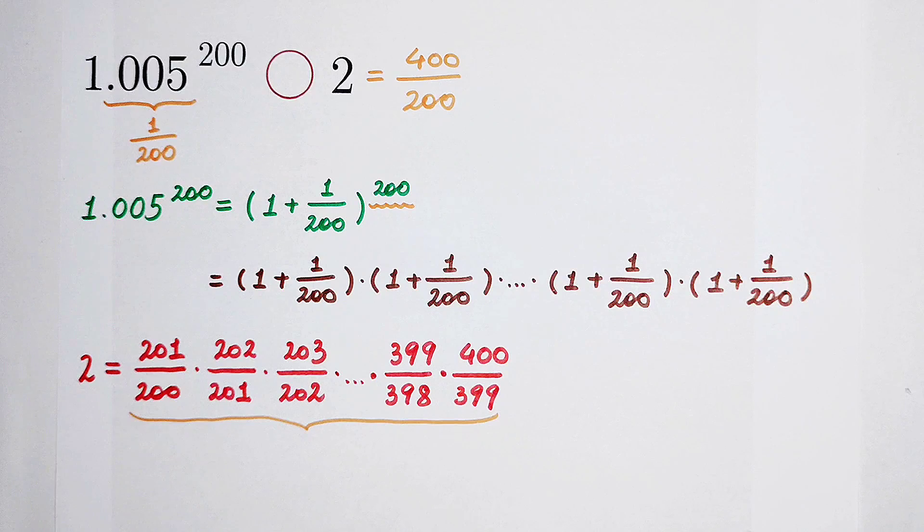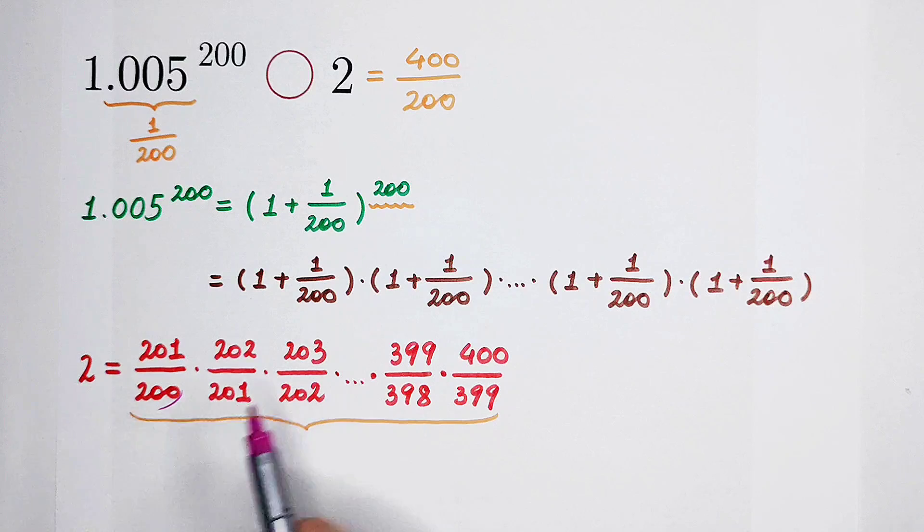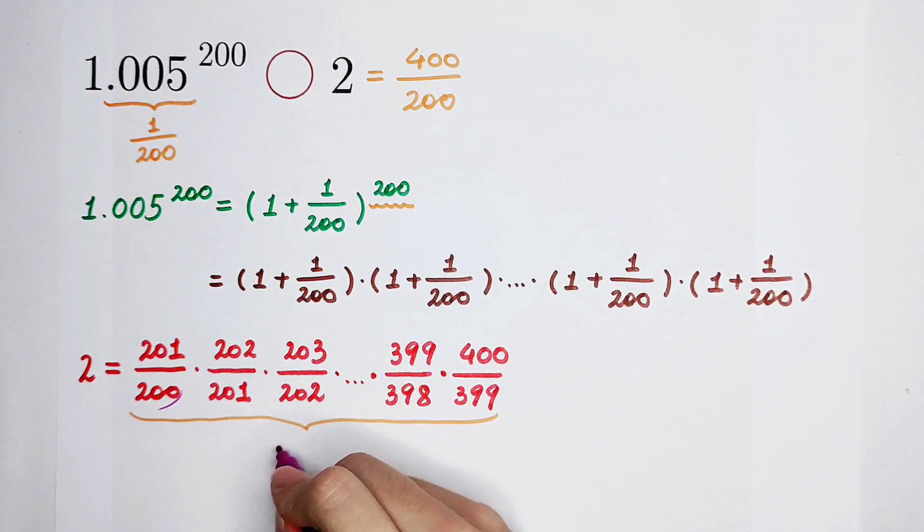Because the subtraction of 399 and 200 is 199. But how many numbers are here? The denominator of the first number is 200, and the denominator of the last number is 399. You should let 399 subtract 200, and then plus 1, because 200 is also a number that we should think of. So there are 200 numbers.